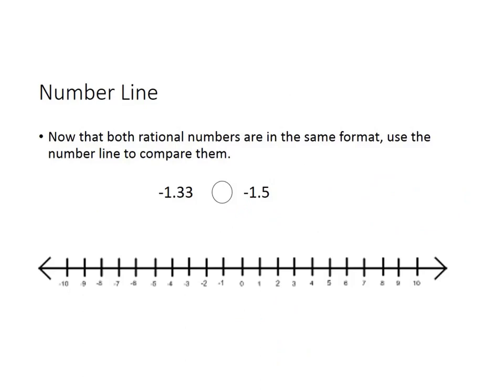Now that both rational numbers are in the same format, we're going to use the number line to compare them. For our example, I left it as negative 1 and 33 hundredths. If you look on our number line, negative 1 and 33 hundredths is going to be very close to the negative 1 mark. And negative 1 and a half is also close, but it's a little further to the left. As you move to the left, the numbers get less value. So negative 1 and 33 hundredths is larger, or worth more value, than negative 1 and a half.